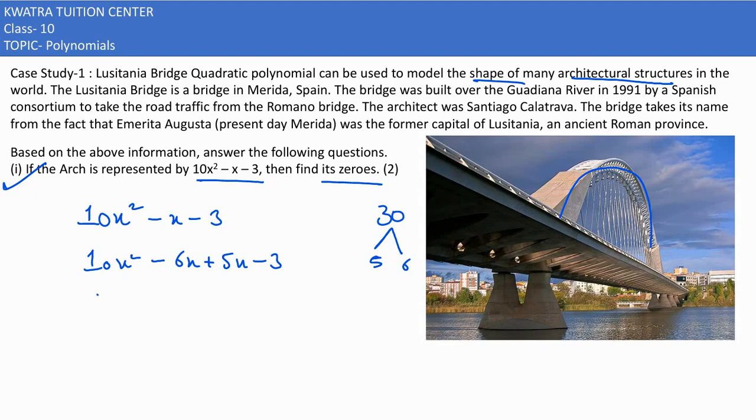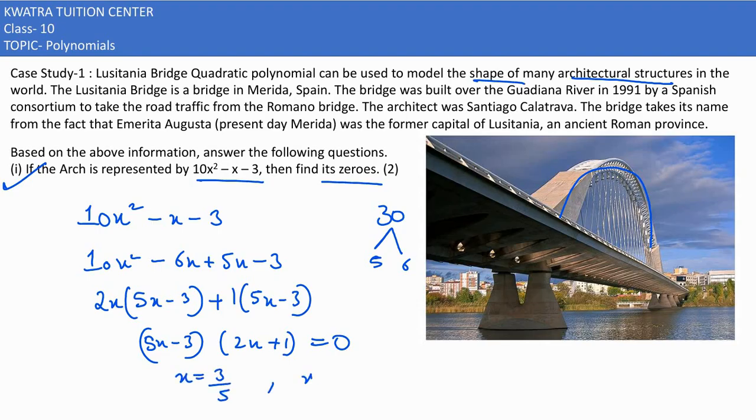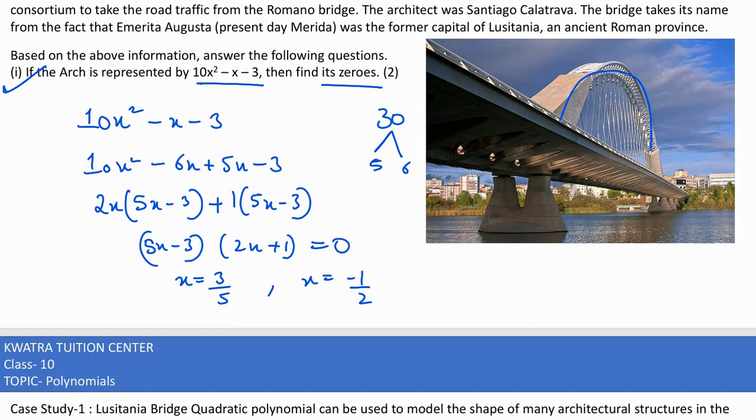And the first value you would have is 5x - 3. Last two can be common, so you would have 5x - 3. So you have two values which is 5x - 3 and the other is 2x + 1. Make it equal to 0. What value of x? 3/5 and the second x value would be -1/2. So α is 3/5, β is -1/2.